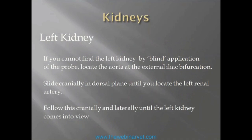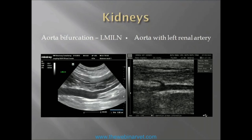In terms of finding the kidneys, if you can't find the left kidney by blind application — which is how a lot of people start — the way you should learn to do this is by locating the aorta at the external iliac bifurcation, then sliding cranially in a dorsal plane on the body until you locate the left renal artery. Once you've found this, you follow it from the aorta cranially and laterally, and the left kidney will come into view.